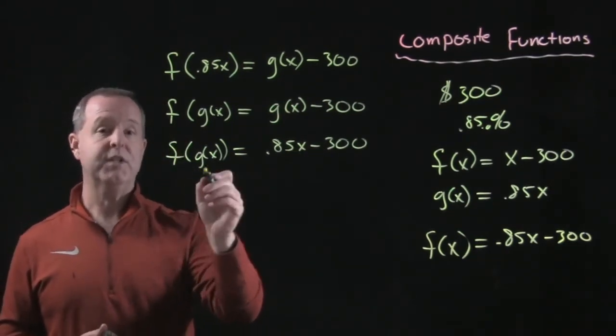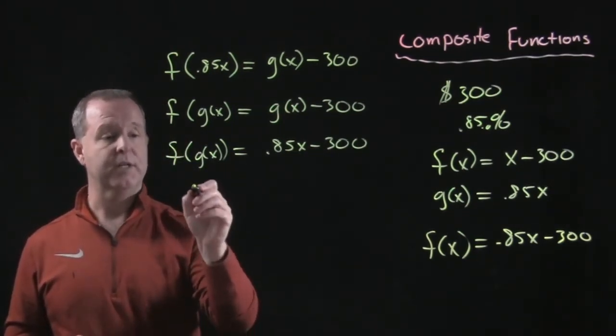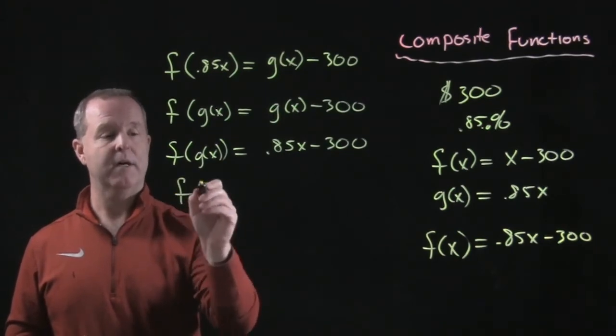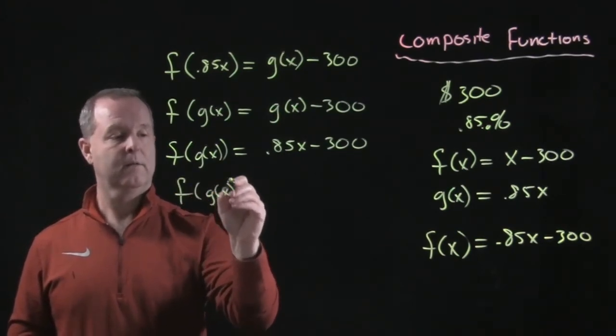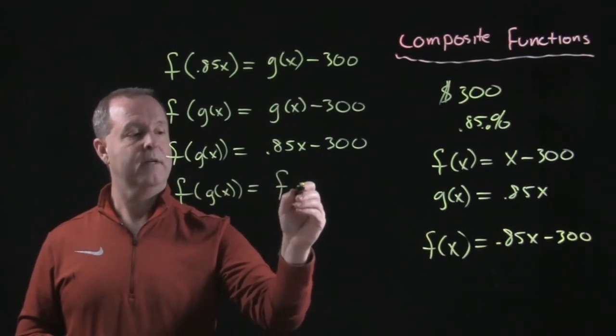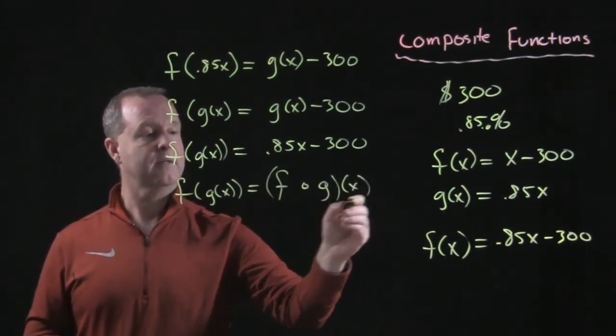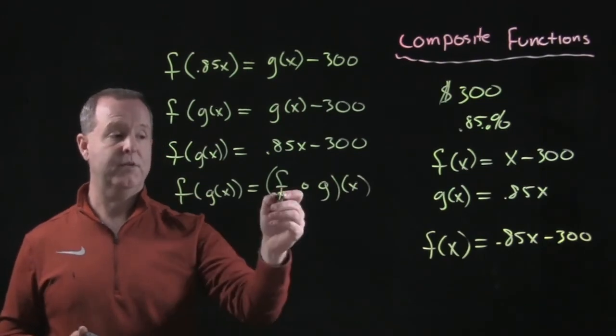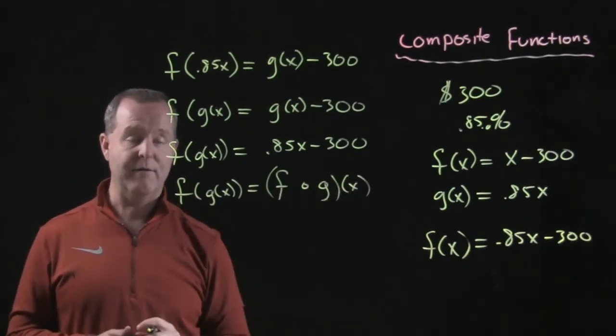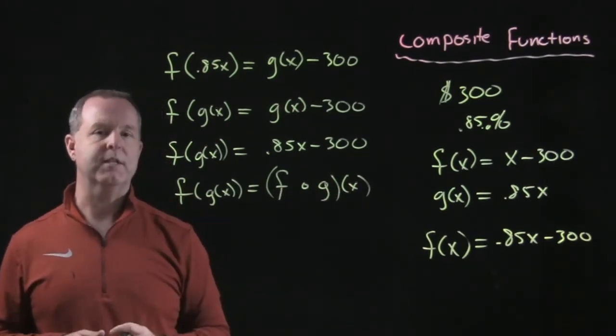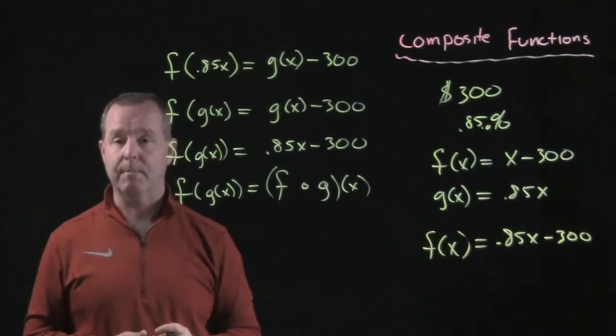What this is called, this f of g of x, it's a composite function. And how you write a composite function is f circle g of x or f composite with g or f with g of x is some of the terminologies that we use when we use a composite function.